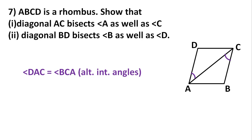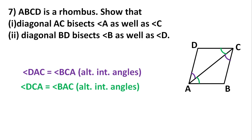Angle DAC and angle BCA are equal because they are alternate interior angles in the rhombus. Similarly, angle DCA equals angle BAC — they are also alternate interior angles. Since BC equals AB because it is a rhombus and adjacent sides are equal, if two sides of a triangle are equal then their opposite angles are equal. So angle BCA equals angle BAC.